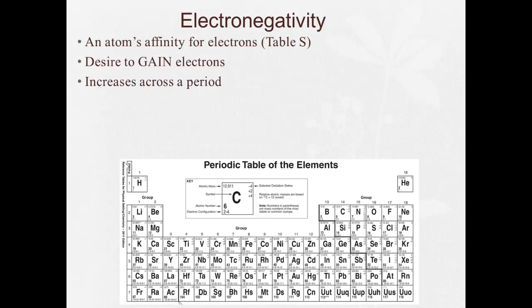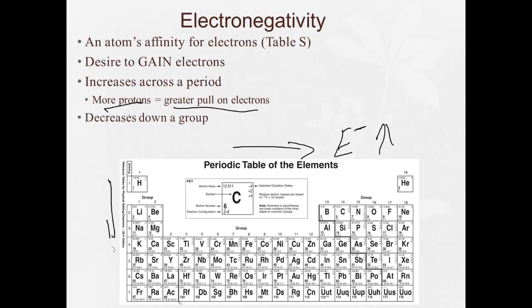That is going to increase across a period. Same reason: more protons, greater pull on electrons. So as we go across, electronegativity, I usually write it capital E with a minus here, will increase. And as you go down a group, electronegativity decreases. Why? More shells, further from nucleus, weaker pull. I don't know if you're noticing a trend here.